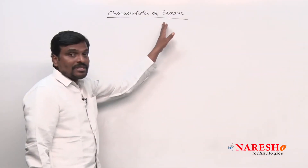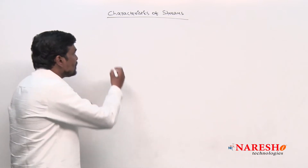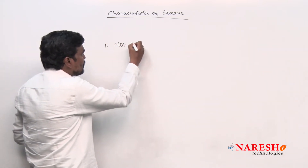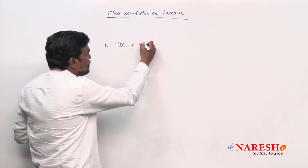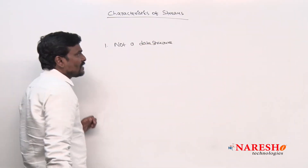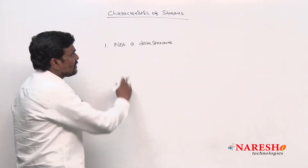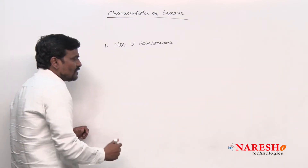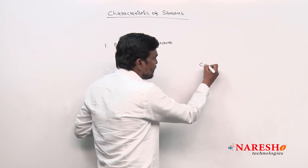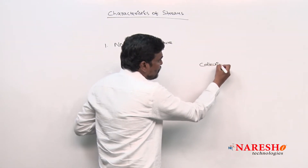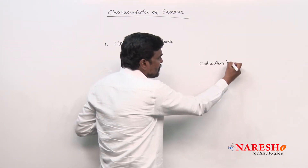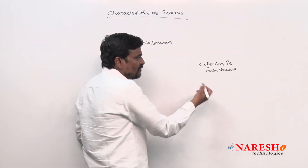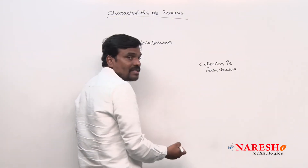When you see the characteristics of a stream, the first one is: a stream is not a data structure. Now, which one is a data structure? Collection. Collection is a data structure because in collection the data is stored by following certain rules and regulations.